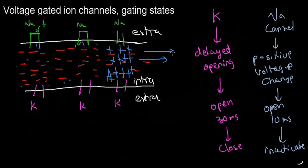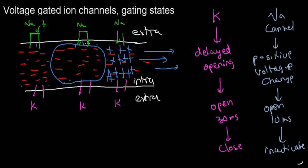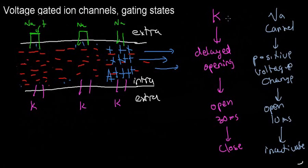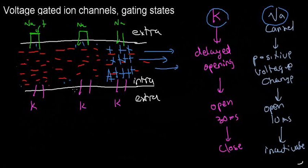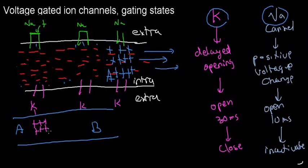The membrane potential resumes its old negative value, and this is how these channels affect the way signals are transduced through the membrane. Basically, if I want to have a signal move from point A to point B inside the cell, I can do it this way — just a big wave of positive charges moving in one direction by opening and closing different channels. If you've understood this, you're pretty much almost ready to discuss the action potential.